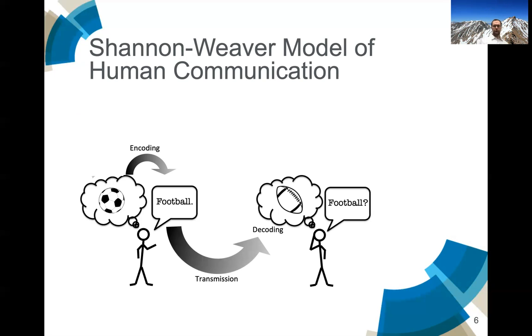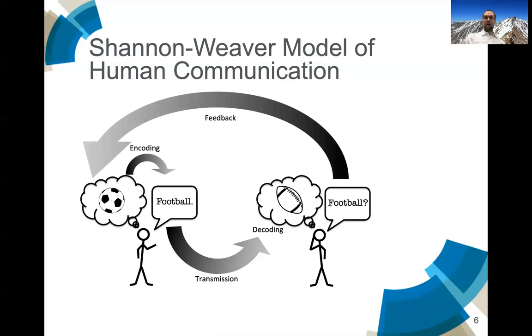We've encoded that into a symbol which we then transmit to someone else. They hear the word football and they might decode it and the message that they have in their brain might be different than the one that we have in our own. And then they might say something like, football, what are you talking about? And that's then the feedback loop. And then it can continue on.